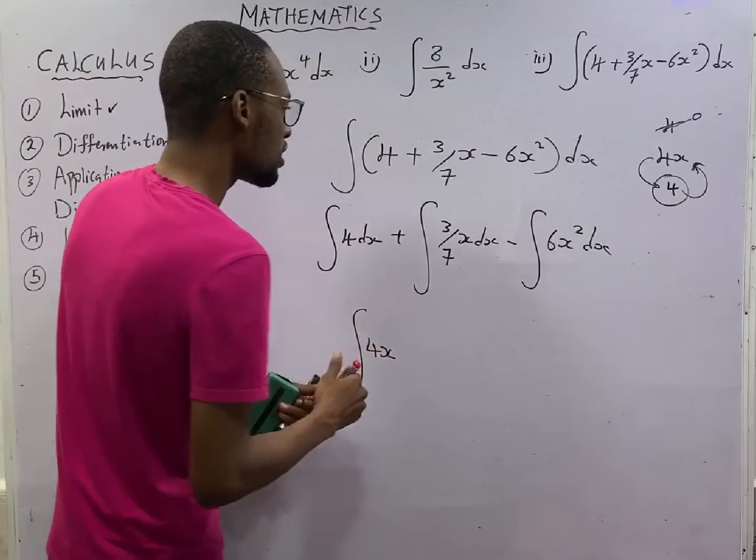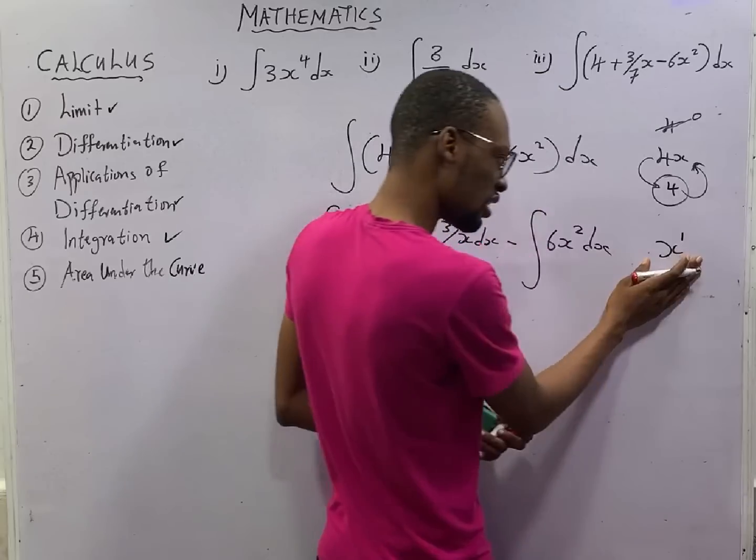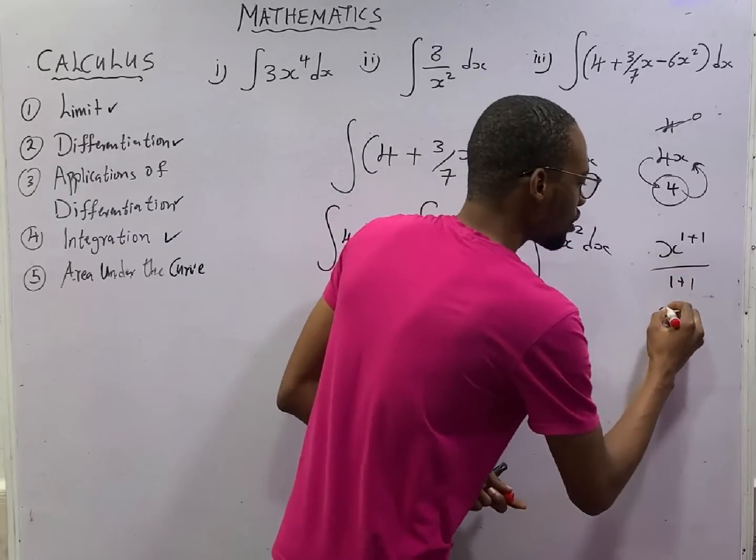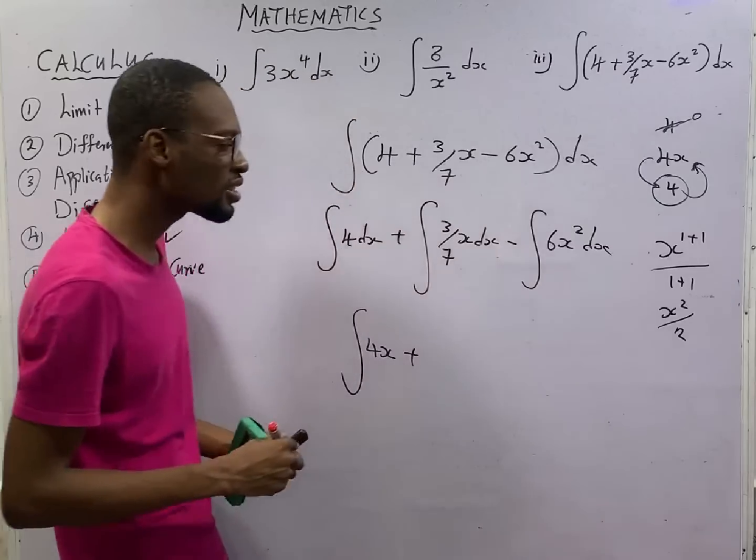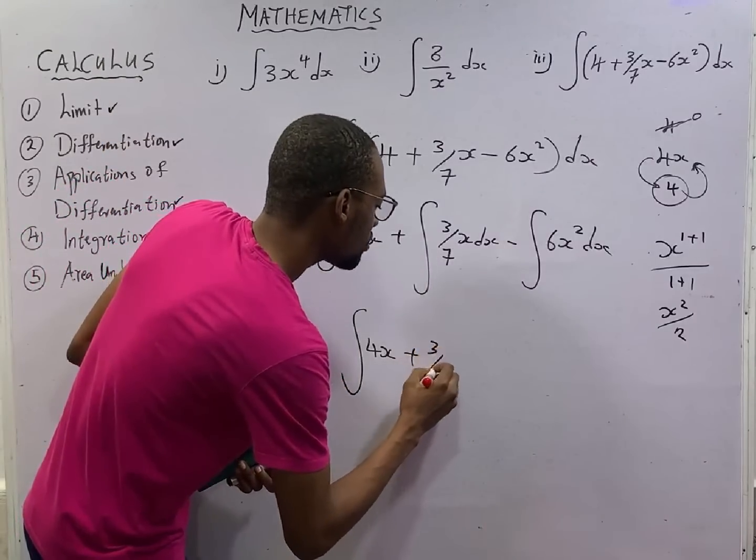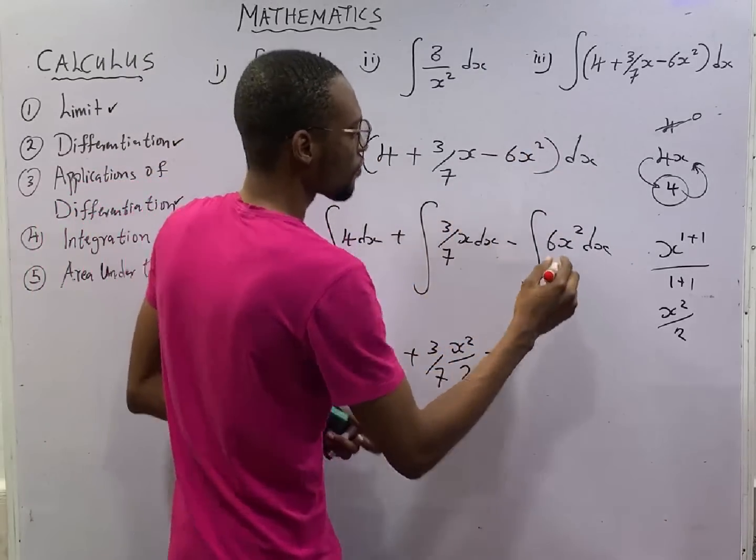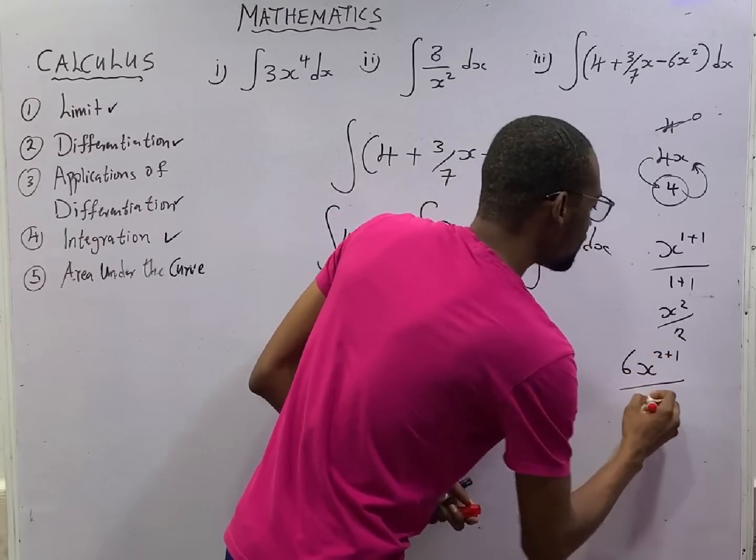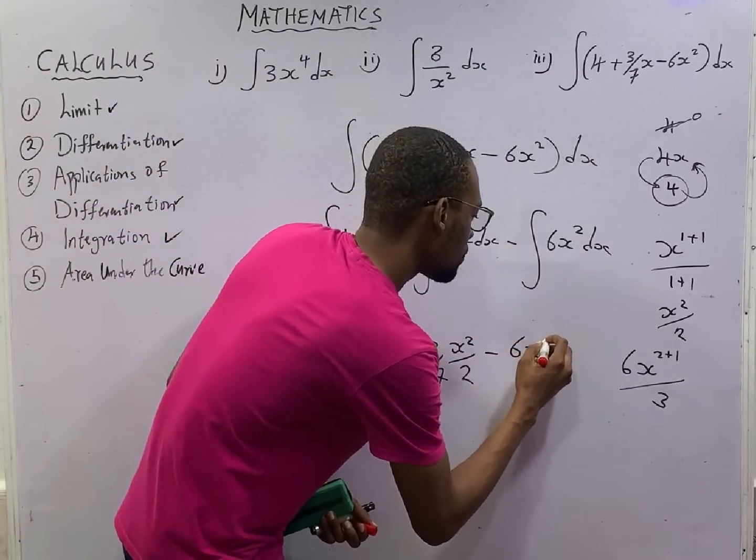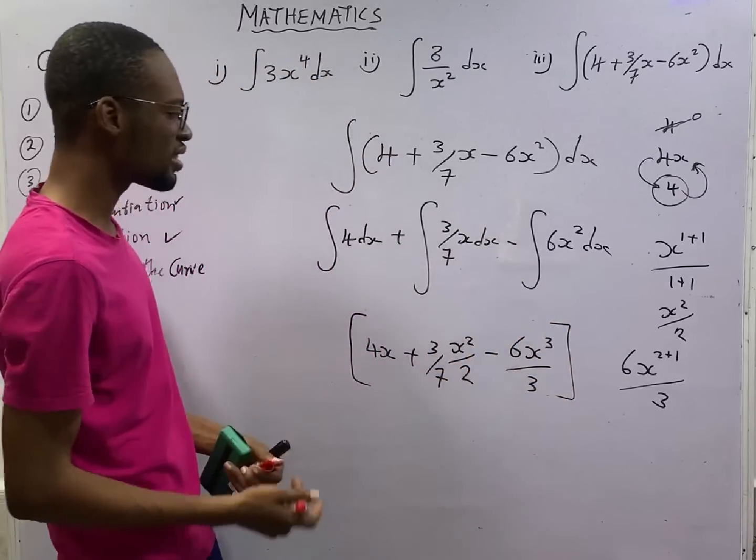This is 4s plus, if you integrate s, this is something like s to the power of 1. Integration says add one to the power, divide by the power. This is s squared over 2, so here will be 3 over 7 times s squared over 2. Minus, integrating here it is 6s squared plus 1 over 3, add one to the power, divide everything by the power. That will give you 6s to the power of 3 over 3.